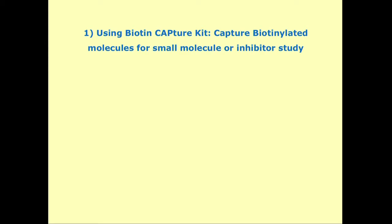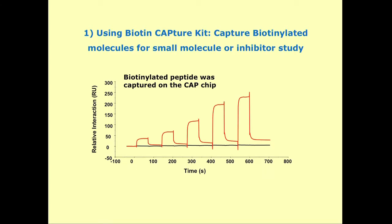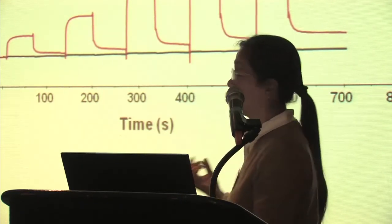One application used a biotin capture kit to capture a biotinylated peptide — one of the peptides studied in relation to the toxin — using a single-cycle kinetics method. The on/off curve showed this is a fast-on, fast-off interaction. Such interactions are very hard to detect with other biochemical methods like pull-down assays, because one wash and the interaction is completely gone. With the Biacore instrument, using very small amounts of protein, you can detect these interactions and get an idea of what other methods would be appropriate for further characterization.